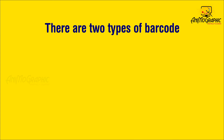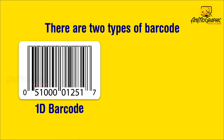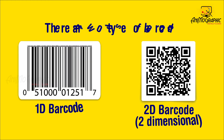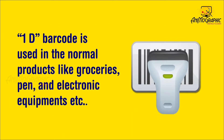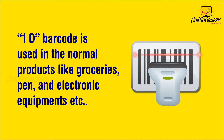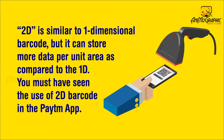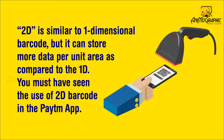There are two types of barcode. One is 1D and the other is 2D, i.e. two dimensional. 1D barcode is used in normal products like groceries, pens, and electronic equipment. 2D is similar to one dimensional barcode but it can store more data per unit area as compared to the 1D.